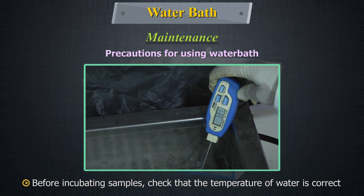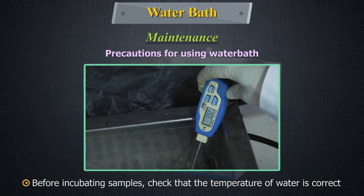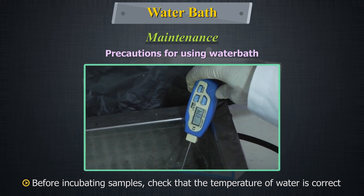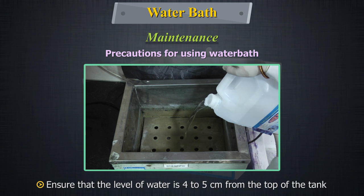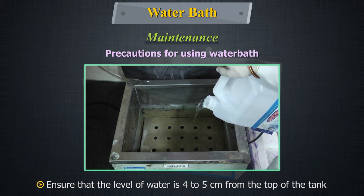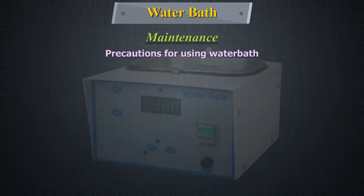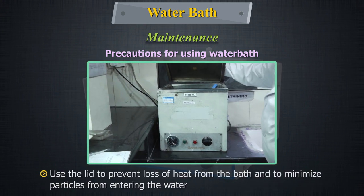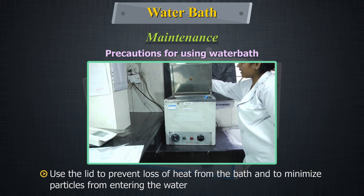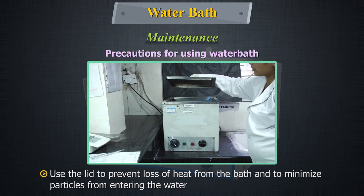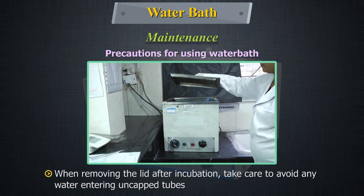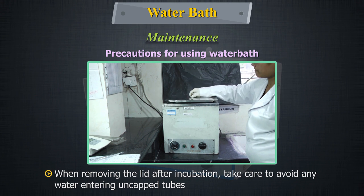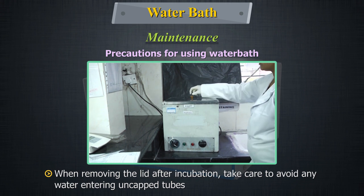Before incubating samples, check that the temperature of the water is correct. Ensure that the level of water is 4–5 cm from the top of the tank. Use the lid to prevent loss of heat from the bath and to minimize particles from entering the water. When removing the lid after incubation, take care to avoid any water entering the uncapped tubes.